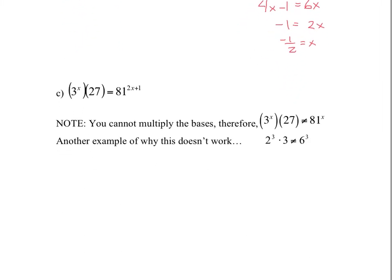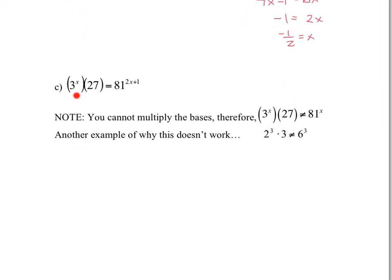So in this question, we're asking 3 to the power of x times 27 equals 81 to the power of 2x plus 1. So a big note here, you cannot multiply the bases. So you cannot multiply those two things together to give you 81 to the power of x. An example of that, just using some numbers, 2 to the power of 3 times 3 does not give us 6 to the power of 3. So you cannot combine those bases.